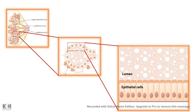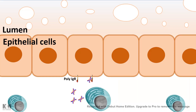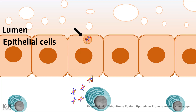In the bigger picture, outside the epithelial cell surface there are antibody-producing plasma cells that produce IgA type antibodies. These antibodies then bind to the poly IgR receptor on the epithelial cell surface and get endocytosed from one surface.